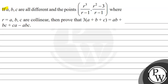Let's see the question. If a, b, c are all different and the points (r³/(r-1), (r²-3)/(r-1)) where r equals a, b, c are collinear, then prove that 3 times of (a+b+c) is equal to ab+bc+ca minus abc.